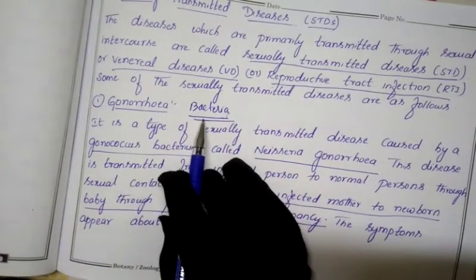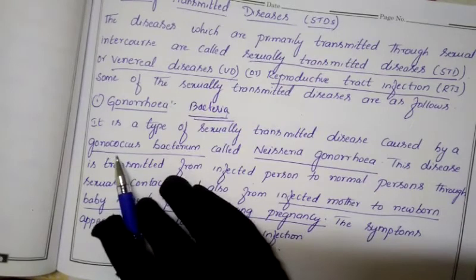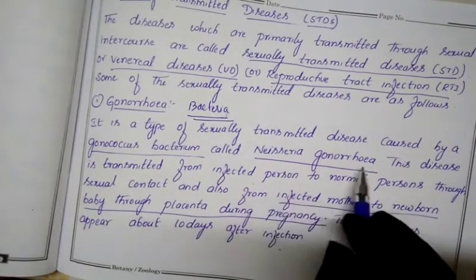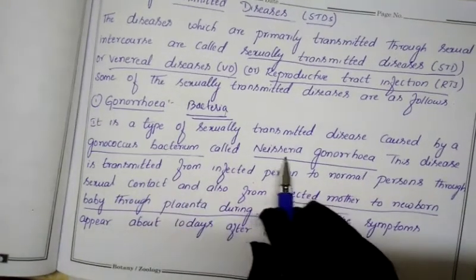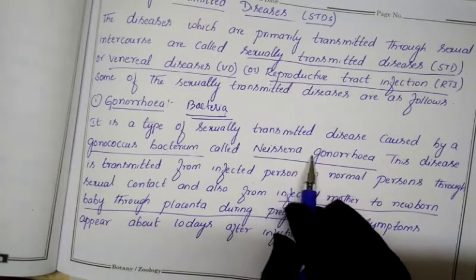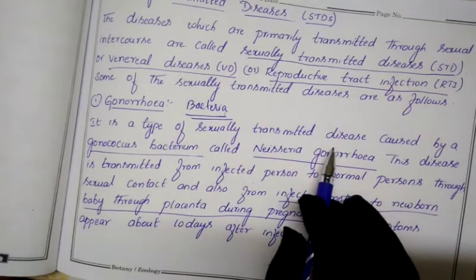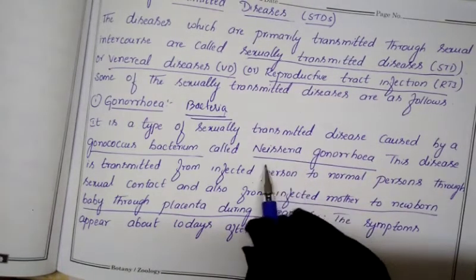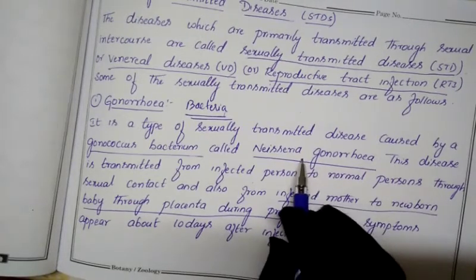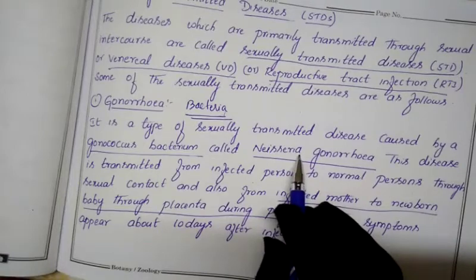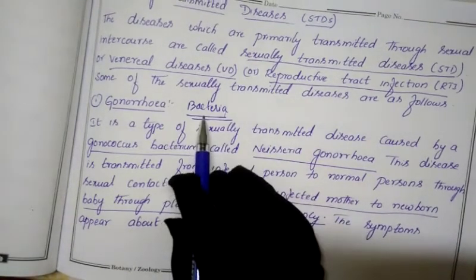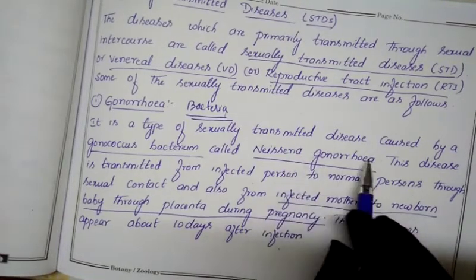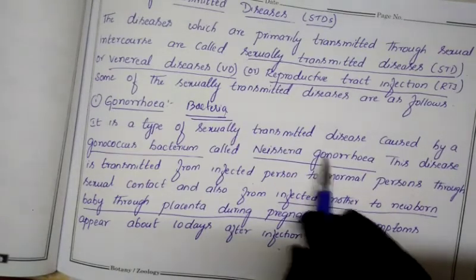Gonorrhea is caused by the gonococcus bacterium, whose scientific name is Neisseria gonorrhoeae. This is important for your exam — in NEET or board exams they will ask which pathogen causes gonorrhea; the answer is Neisseria gonorrhoeae. A pathogen is a disease-causing microorganism.